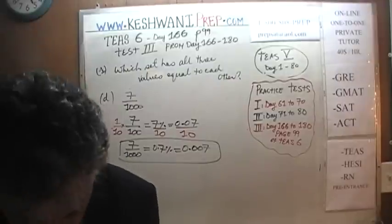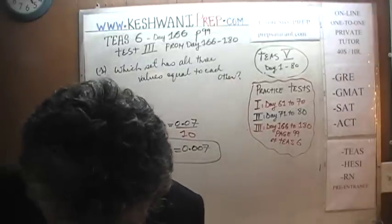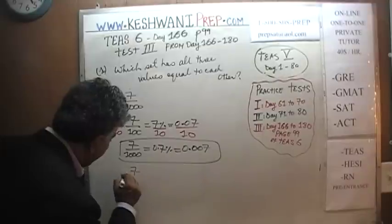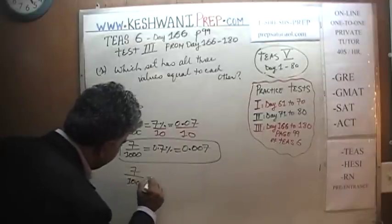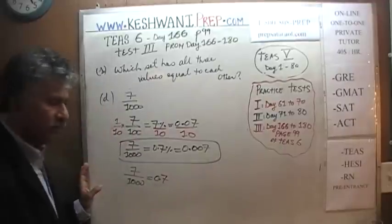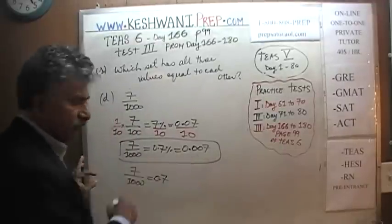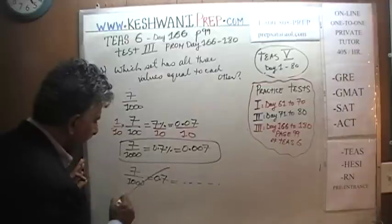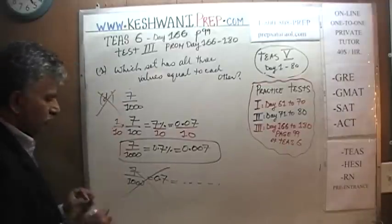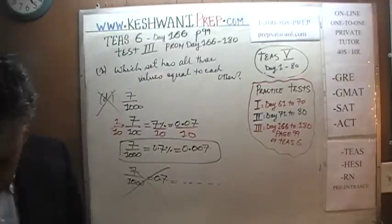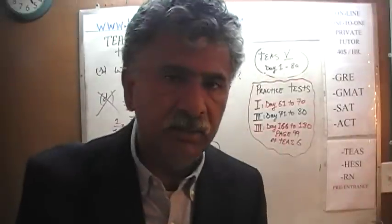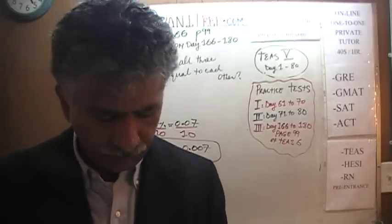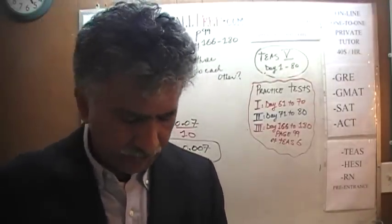Let's see what answer choice D actually shows. They say 7 over 1,000 is equal to 0.7 — no, it's not equal to 0.7, it's equal to 0.007. We don't have to read any more. Answer choice D is wrong — the correct decimal is 0.007, not 0.7.